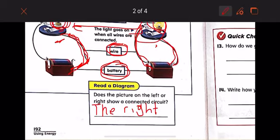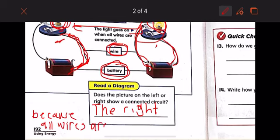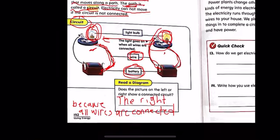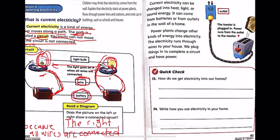So why is the right one lit up? Let's write together: because all wires are connected. All right, so because all the wires are connected, current electricity can flow.